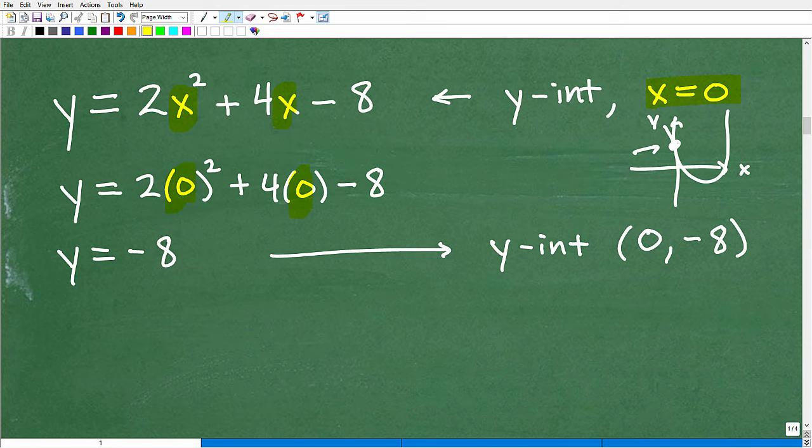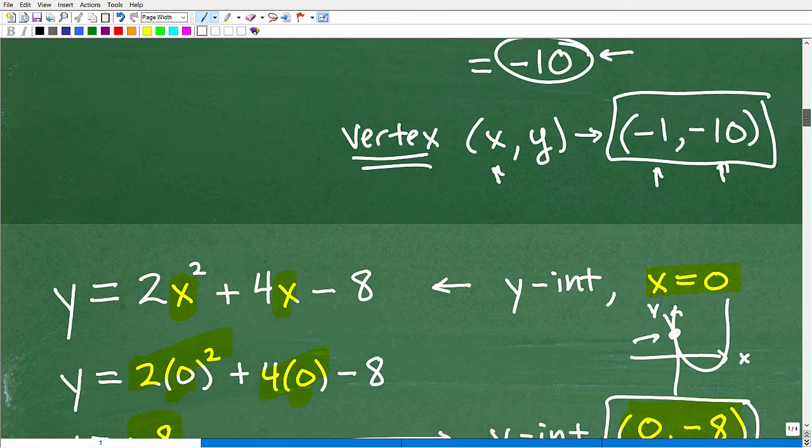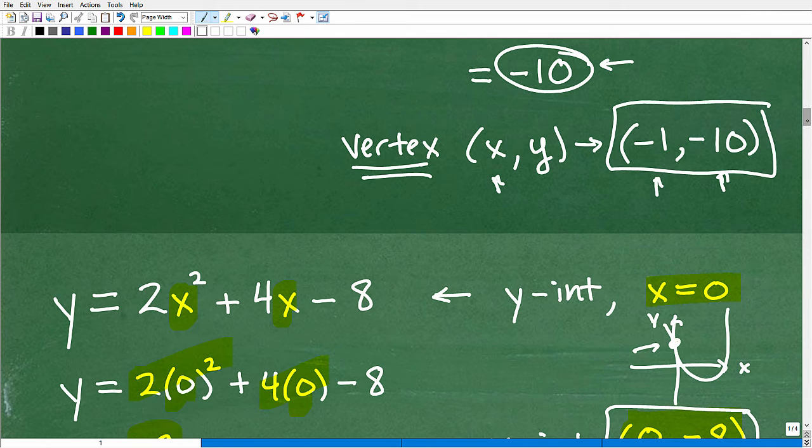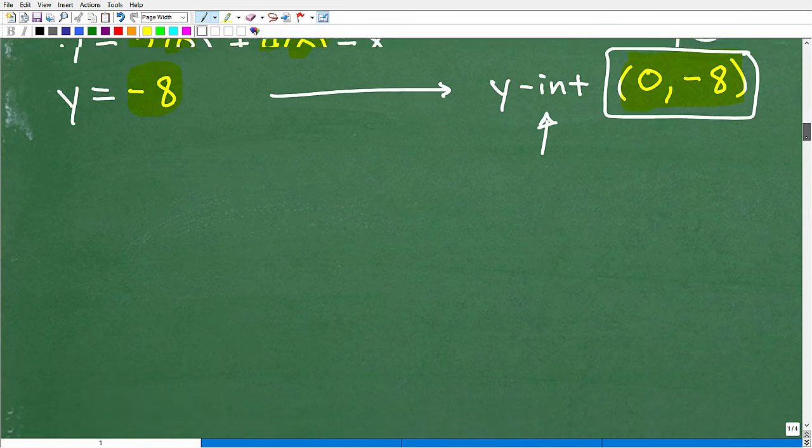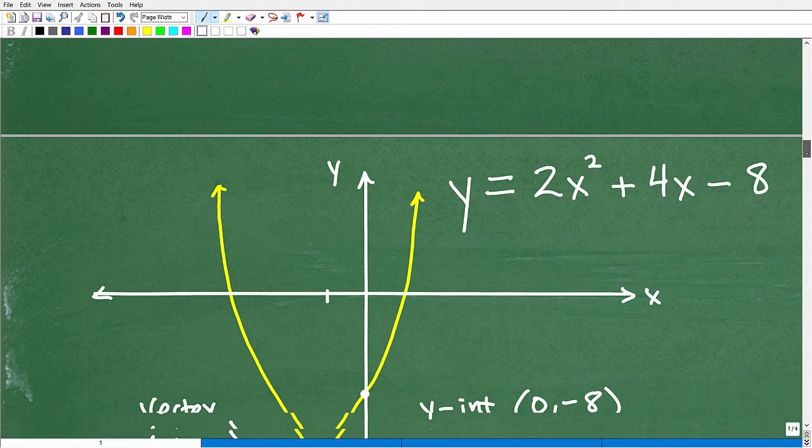So we'll just replace this x with zero, and all this goes away. This will be zero. This is zero. So we're left with negative eight. So our y-intercept, remember, x was zero. When x is zero, y is negative eight. So that's another point. Zero, negative eight is our y-intercept. So we have our y-intercept, and we have our vertex, at negative one, negative ten. So now let's start pulling this together on a graph.